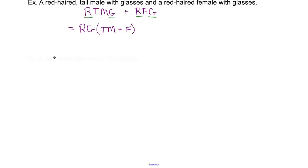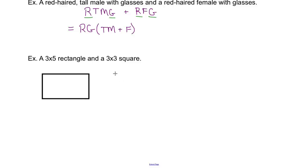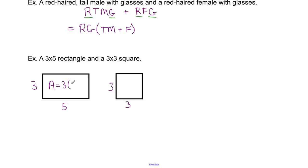Let's put this into math context. You have a 3 by 5 rectangle and a 3 by 3 square. What do they have in common? They share a 3 — the same width. The area of the rectangle is 3 times 5; the area of the square is 3 times 3. What is the greatest value they have in common? Not the 5, because the square doesn't share it. So the greatest common factor is 3.